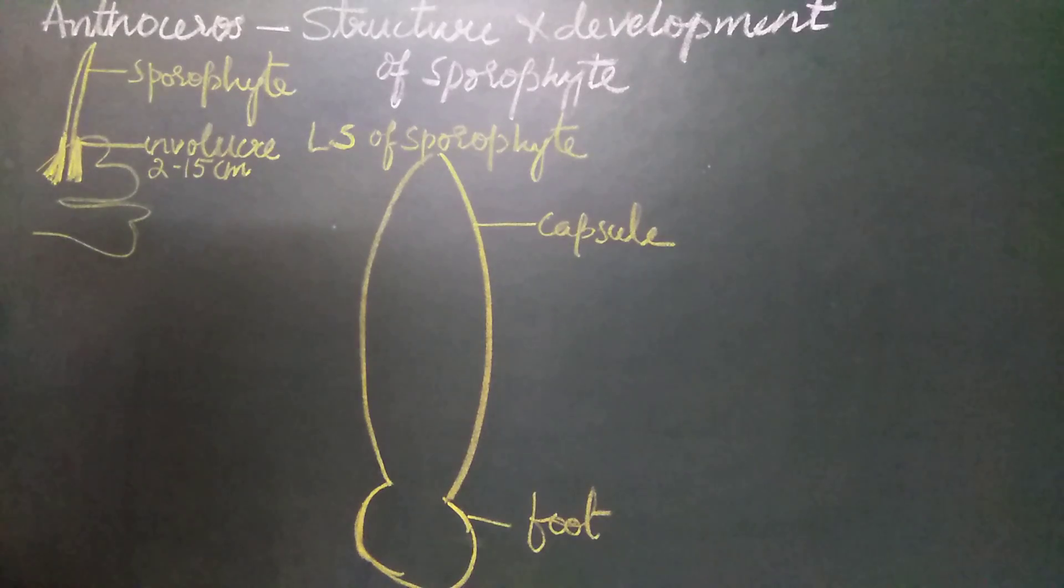The foot is made up of vacuolated parenchyma cells. The parenchyma cells which are towards the periphery of the foot are vertically elongated and palisade-like. The remaining cells of the foot region are parenchyma and vacuolated.